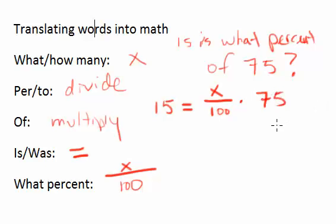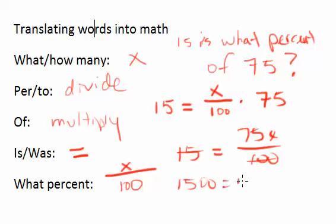At this point we have a nice equation we can solve, which makes it way easier than deciding what formula to use or how to set it up. We just translate literally, so we end up with 15 equals 75x over 100. Multiply both sides by 100, and we get 1500 equals 75x. It looks like x is 20. Just a little basic translation skill for you.